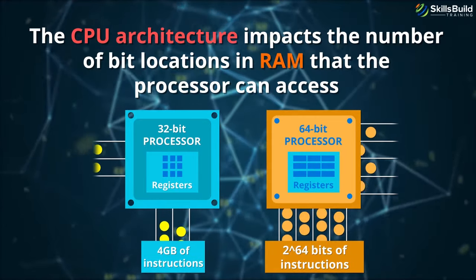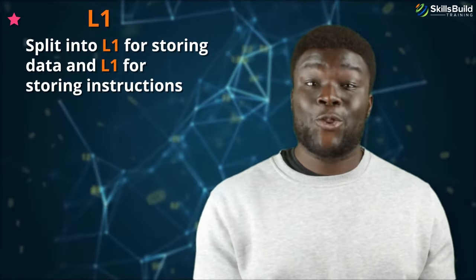CPUs also have cache memory which only became mainstream in the early 90s and today can be found divided into 3 levels: L1, split into L1 for storing data and L1 for storing instructions. There is also L2 and L3.